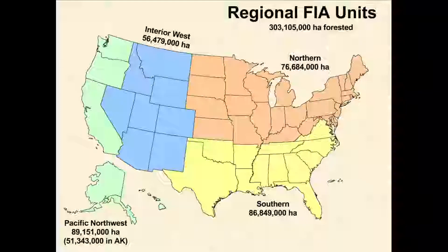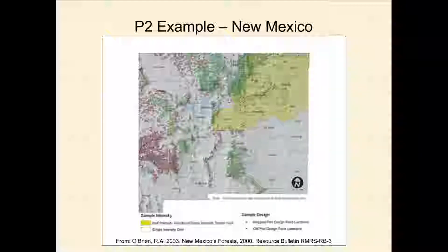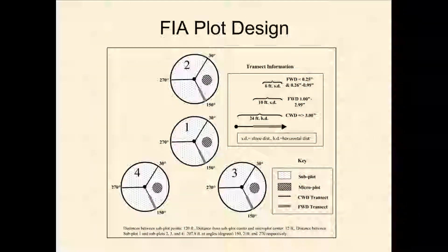There are four sister FIA units. Our states are covered there in the blue. It's a national program with one consistent protocol applied nationwide. The data I'm going to talk about today comes from what we call our phase two, which is our basic ground plots. The new plot design has four subplots that add up to one-sixth of an acre total. The little ones are the micro plots that we use for seeds and saplings.